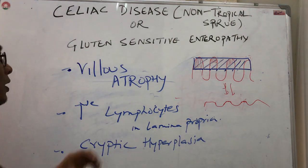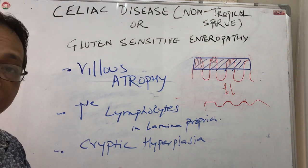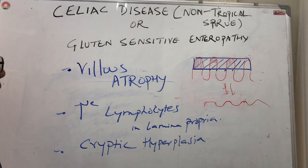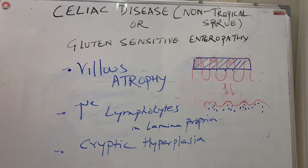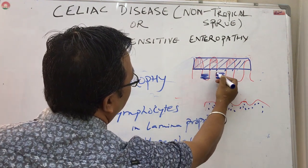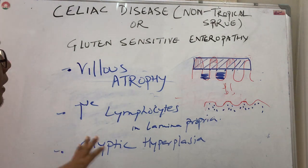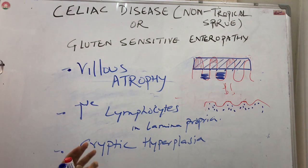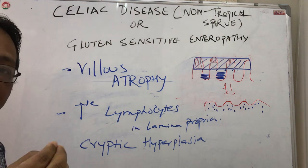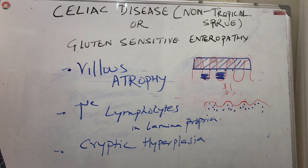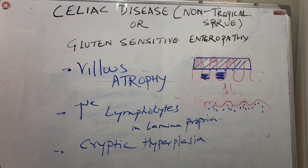When villi are lost, it leads to malabsorption of nutrients, iron, folic acid, and fat, causing many signs and symptoms of celiac disease. There is also increased lymphocytes in the lamina propria and crypt hyperplasia. These three features are seen on intestinal biopsy to diagnose celiac disease. However, biopsy is not 100% diagnostic alone — we must also do serological studies for antibodies to endomysium and tissue transglutaminase, which give 95–100% accuracy in diagnosing celiac disease.